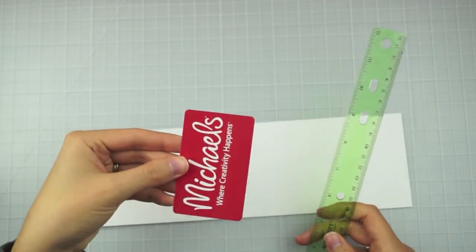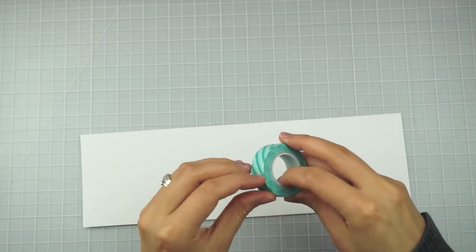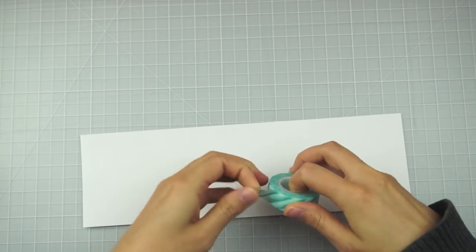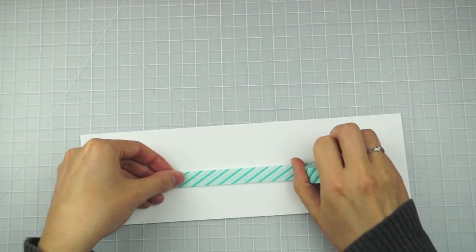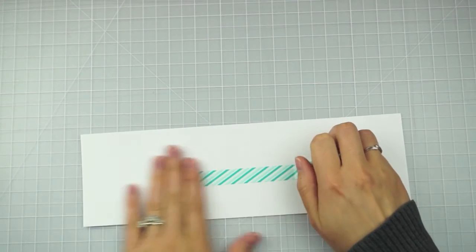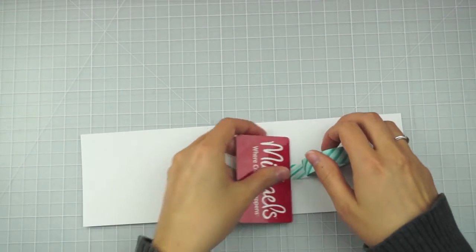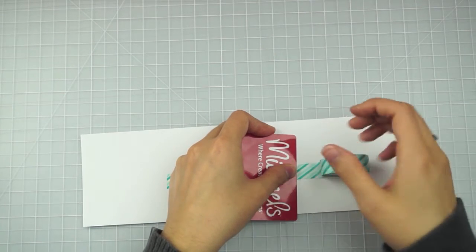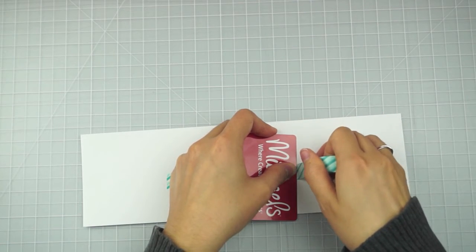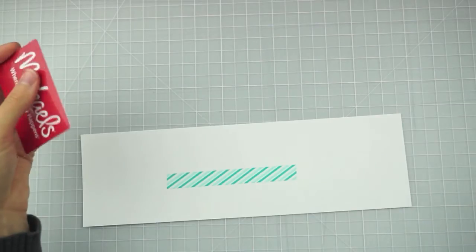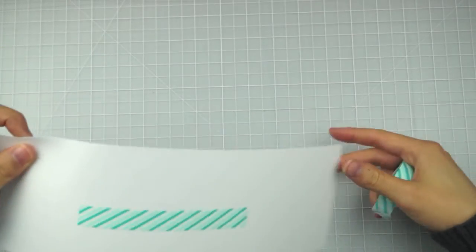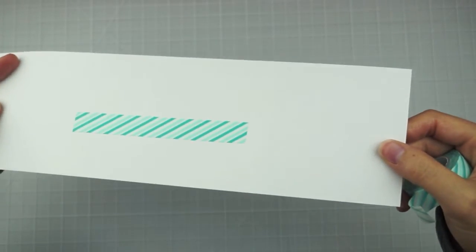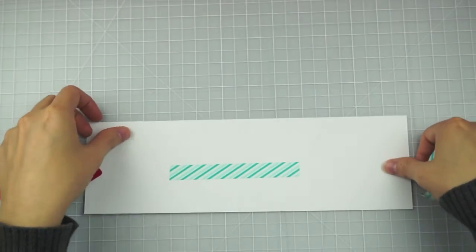You can use a ruler or you can use a credit card. In my case, I have a gift card here. You just roll out the washi tape that you want to use and line it up wherever you want it. Of course, for this, I just need to put it down on my paper. And then you're going to hold your straight edge. It can be the ruler or your card. And then just pull your washi tape and it leaves you with a beautiful straight edge.